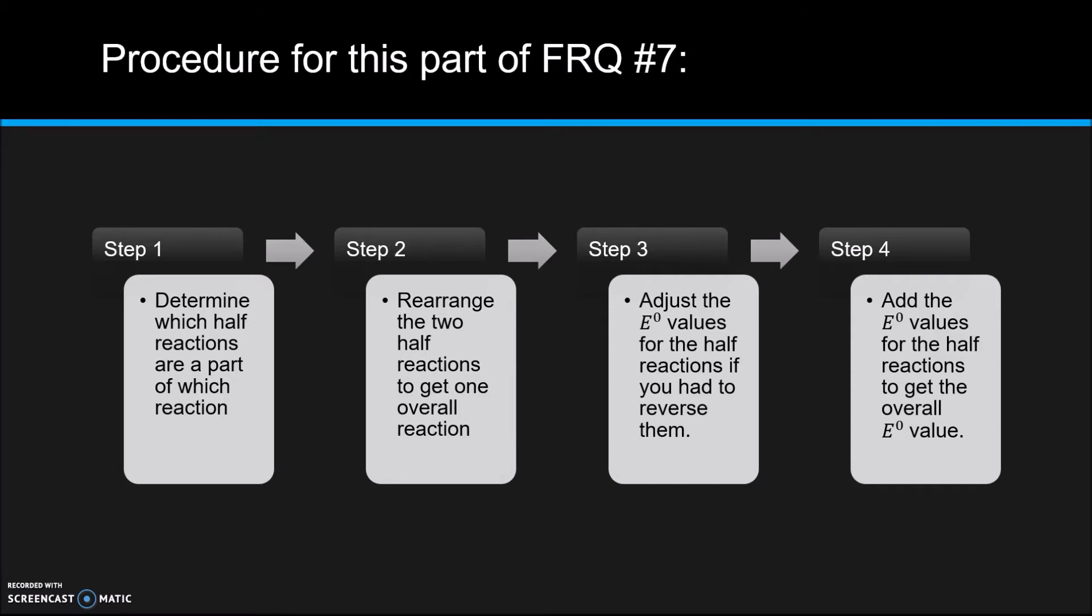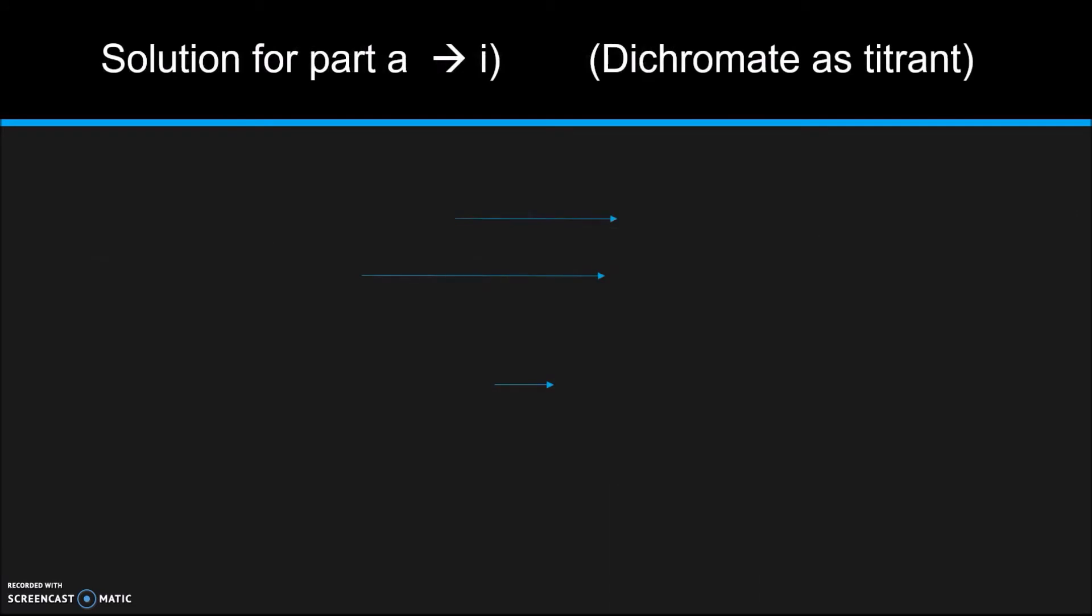Okay, so here's the solution for part A, part I of part A, I should say, with dichromate as a titrant. So first, we're going to select half reactions 3 and 4 because if you notice, those half reactions will give us all the compounds or elements that make up the overall reaction for dichromate. So here we have the first half reaction, half reaction number 3. Here we have the second half reaction, half reaction number 4.